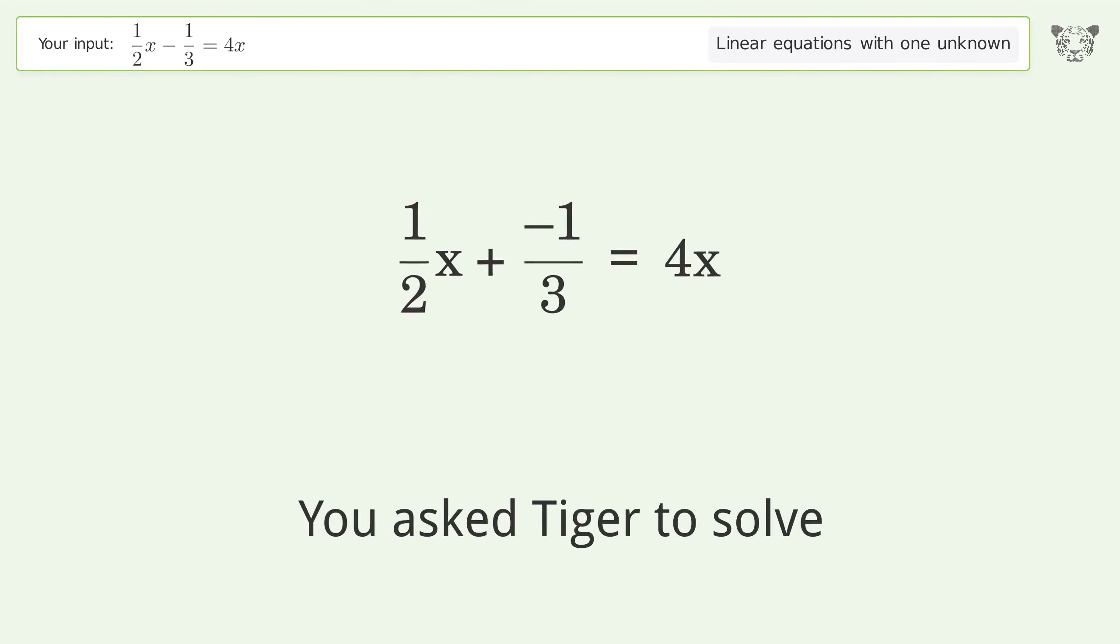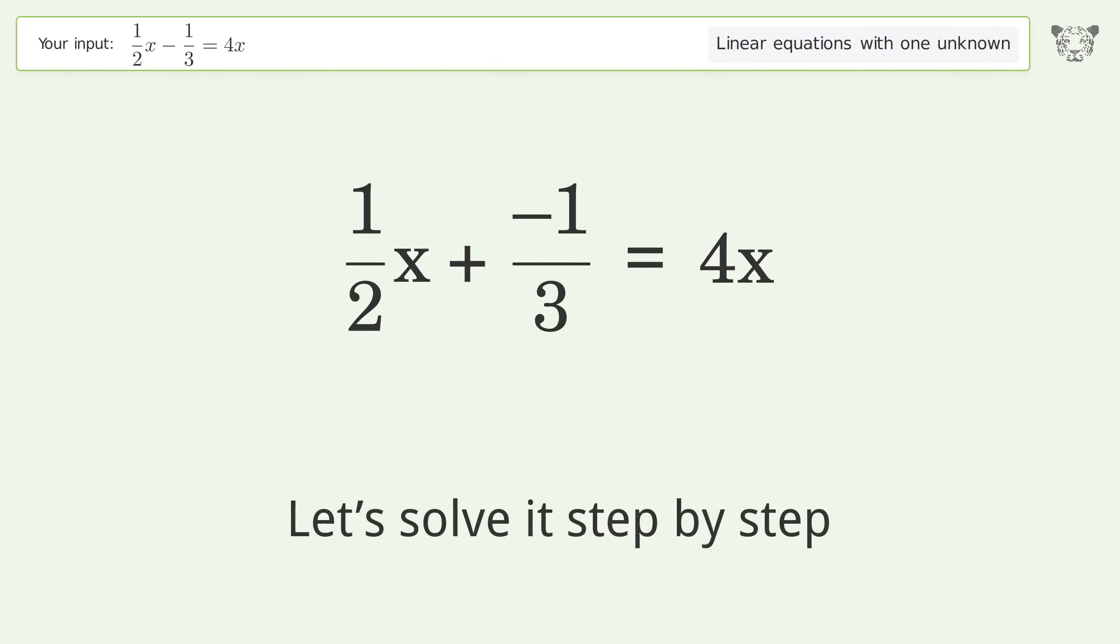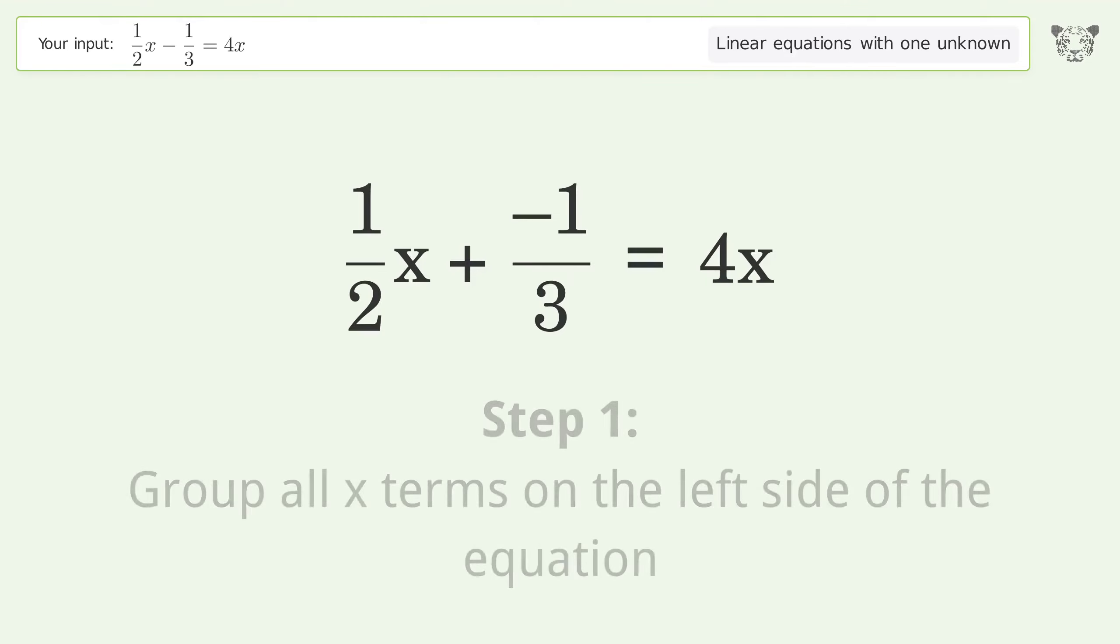You asked Tiger to solve this equation dealing with linear equations with one unknown. The final result is x equals negative 2 over 21. Let's solve it step by step. Group all x terms on the left side of the equation.